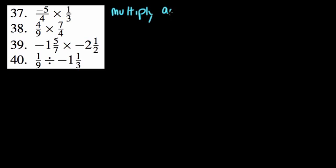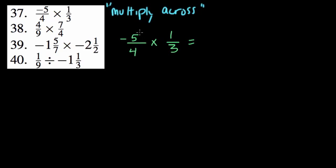We're working with fractions and mixed numbers that are both positive and negative. In problems 37 and 38 we're multiplying fractions. A pretty straightforward strategy is to multiply across — you might have heard this before. So in problem 37 we have negative 5 over 4 times 1 third.